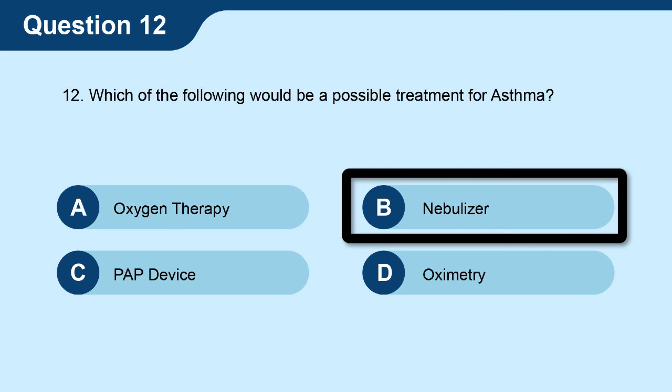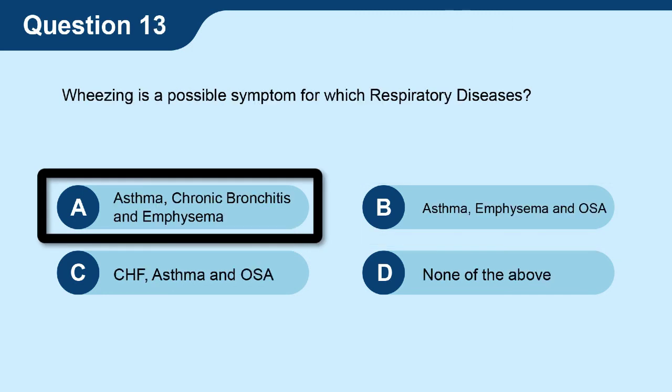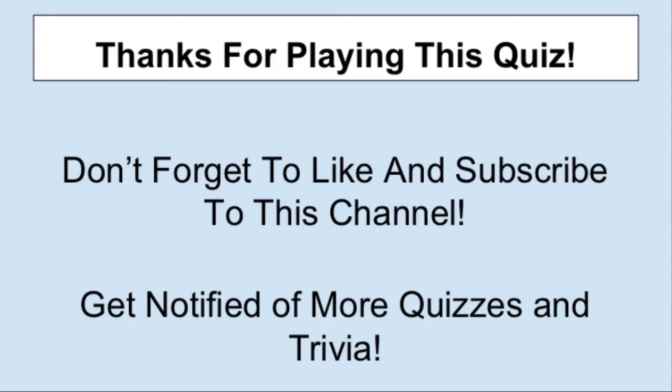Question twelve: which of the following would be a possible treatment for asthma? The answer is B — nebulizer. Question thirteen: wheezing is a possible symptom for which respiratory diseases? The answer is A — asthma, chronic bronchitis, and emphysema. Hopefully you guys got all those questions right. If you need to review, you can always take this quiz again to further enhance your knowledge of respiratory diseases and disorders. Thanks for playing — don't forget to like and subscribe and get notified of more quizzes and trivia. See you guys on the next one.